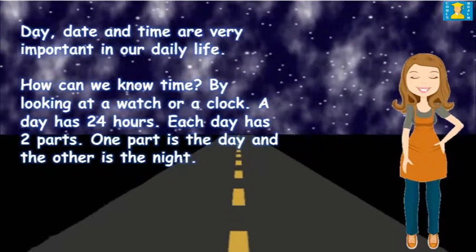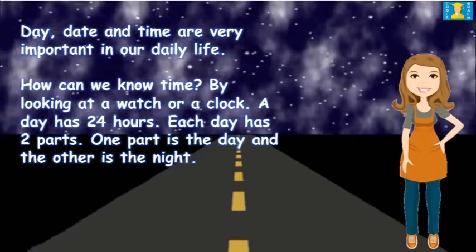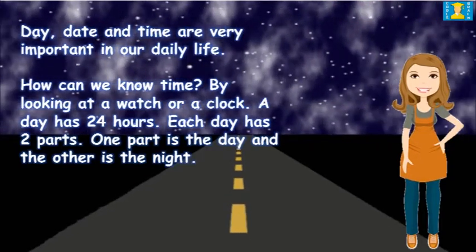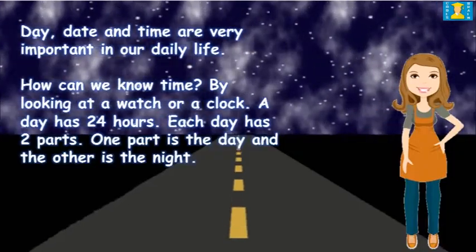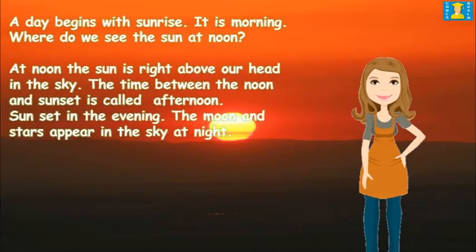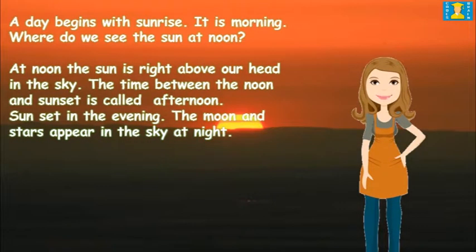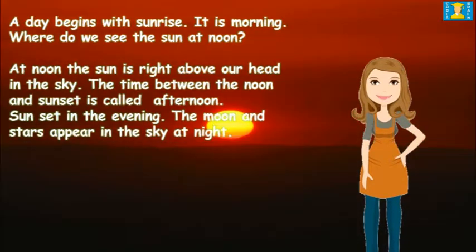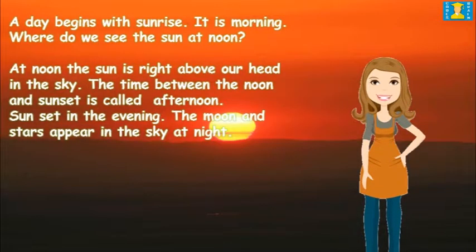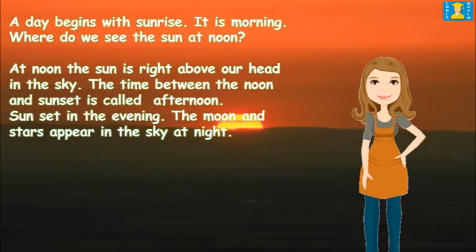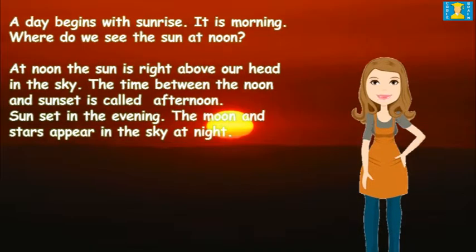A day has 24 hours. Each day has two parts. One part is the day and the other part is night. A day begins with sunrise — it is morning. Where do we see the sun at noon? At noon, the sun is right above our head in the sky.